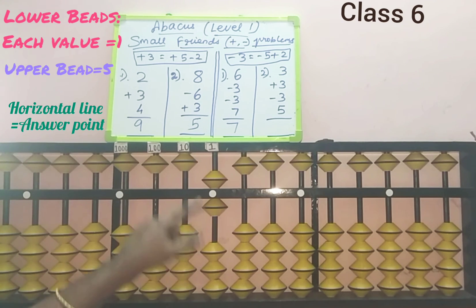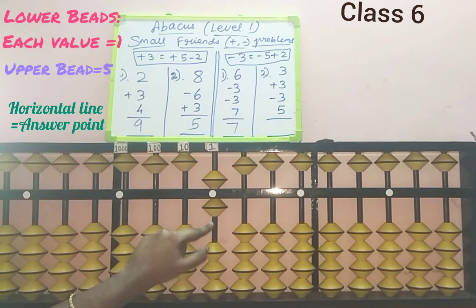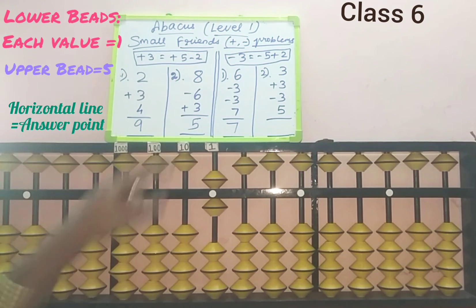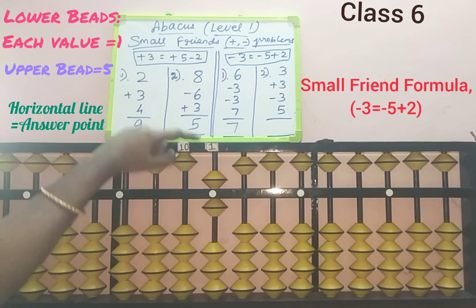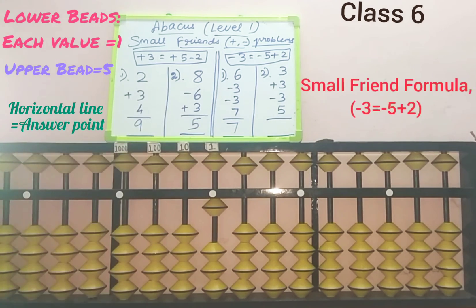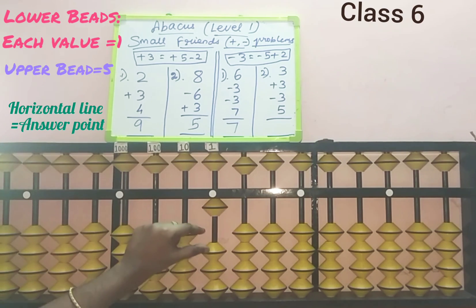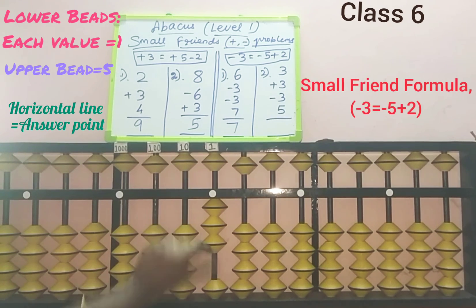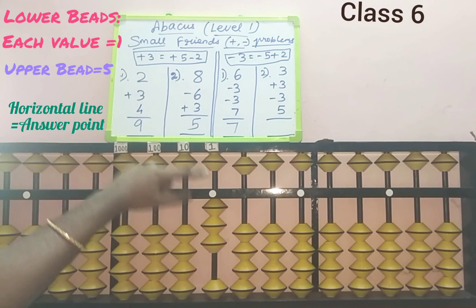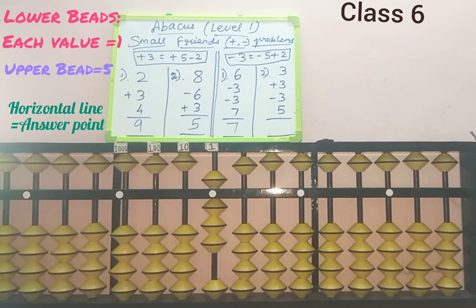Next, third row: minus 3. Remove 3 beads from the answer point in the ones slot. In the lower part only 1 bead is added, so we cannot remove 3 directly. Apply the formula for removing 3 — the question has a minus symbol, so check whether we can do minus 5. Five is added, so minus 5. Three's friend is 2; add the friend: 1, 2. Minus 5 plus 2 is the small friend formula for minus 3 — minus 3 completed. Last row: add 5 directly since 5 beads are available. Eight is the answer for the second sum.